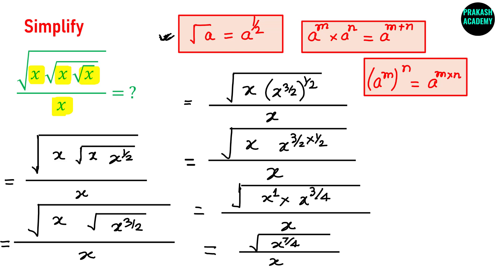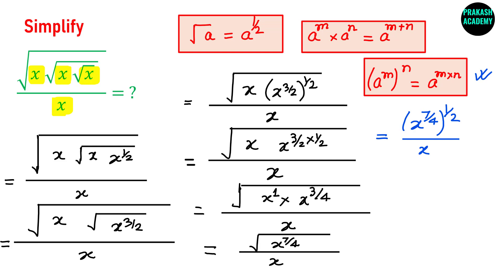Once again using the formula that root a can be written as a raised to the power 1 by 2, I can rewrite this as x raised to the power 7 by 4, raised to the power 1 by 2, divided by x. Applying the rule a raised to the power m raised to the power n equals a raised to the power m times n, this becomes x raised to the power 7 by 8, divided by x.